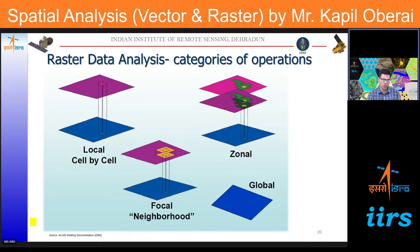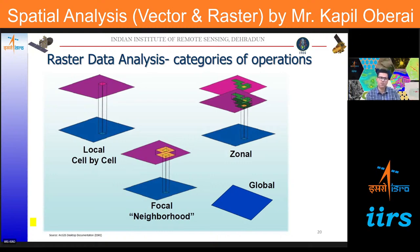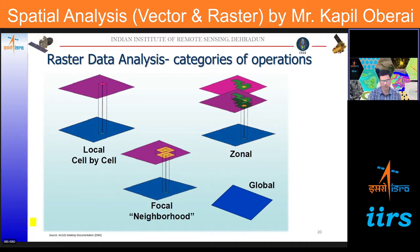Local operations are performed on a cell-by-cell basis. Focal operations (also called neighborhood operations) consider not only the cell under consideration but also the neighboring pixels within its vicinity. Zonal operations consider groups of pixels as a zone and perform operations treating those zones as a group. Global operations work on the entire raster dataset.